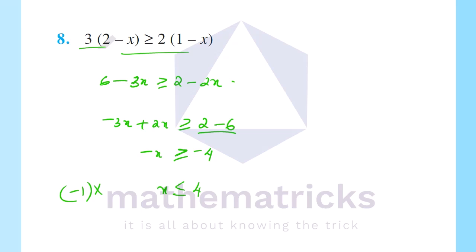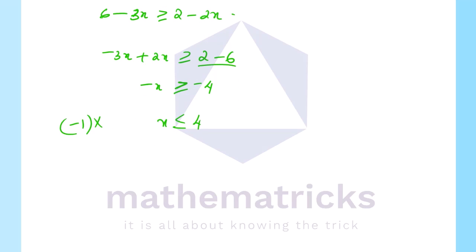x is less than or equal to 4. x is a real number and x less than or equal to 4. The solution is x equal to open interval minus infinity to closed interval 4, because x less than or equal to 4 is a closed interval. This is the answer.